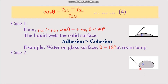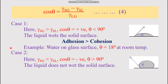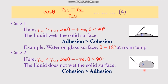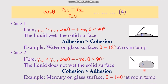Case 2: The contact angle is obtuse, meaning gamma_SG is less than gamma_SL. cosθ is negative, so theta is greater than 90°. No wetting takes place. For example, a drop of mercury on a glass surface tends to form a compact drop rather than spread — squeezing tendency overpowers spreading tendency, meaning cohesion is greater than adhesion. Mercury has a contact angle of 140° at room temperature.